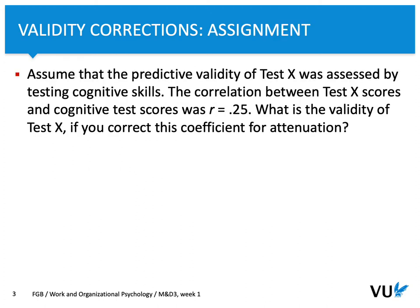Let's do a brief assignment. Assume that the predictive validity of test x was assessed by testing cognitive scales. The correlation between test x scores and cognitive test scores was 0.24. What is the validity of test x if you correct this coefficient for attenuation?